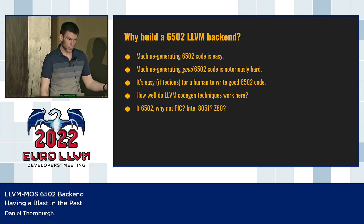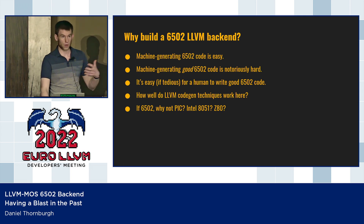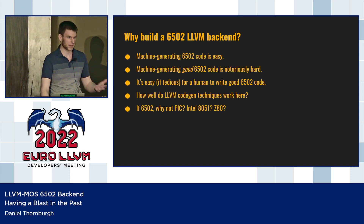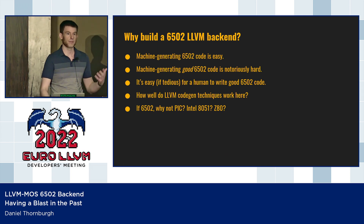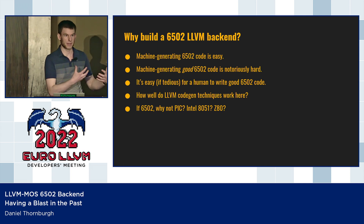I wanted to take LLVM — all the principles and practices that have gone into its code generation techniques — and apply them to this problem to see if it would work well. And if it works for the 6502, there are other weird tiny microarchitectures that are still relevant, things like PIC, the 8051, and Z80. It would be possible to open LLVM up to these small, tiny microarchitectures common in embedded systems.